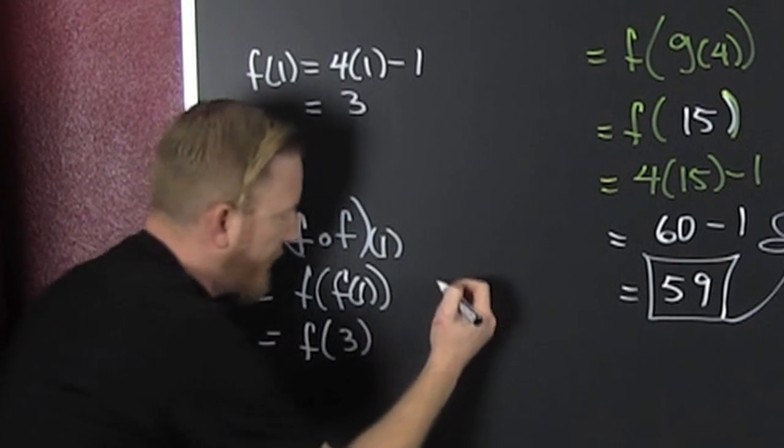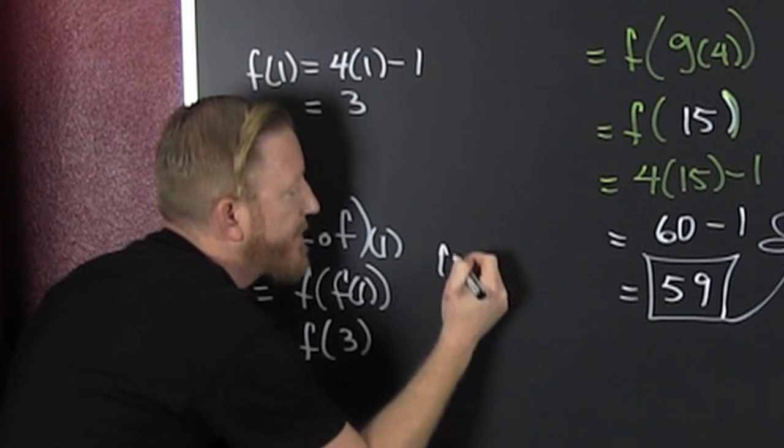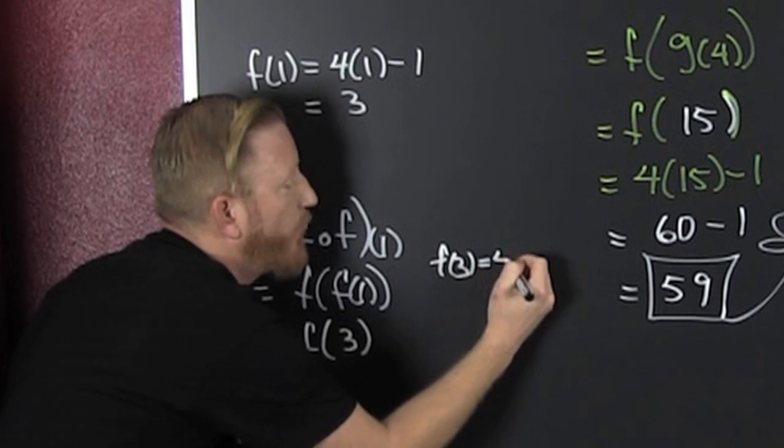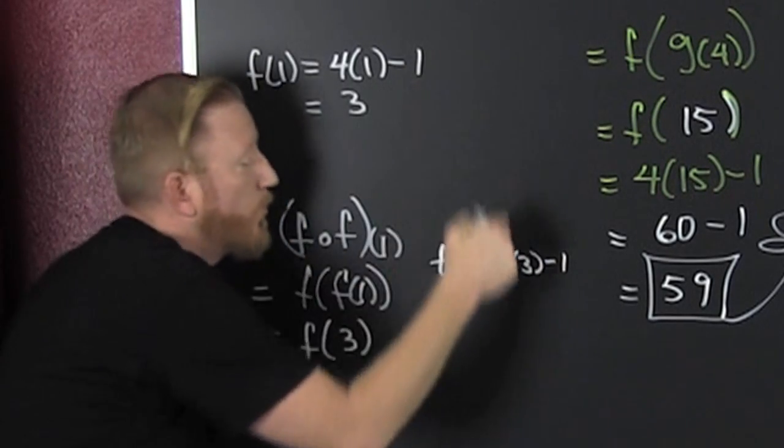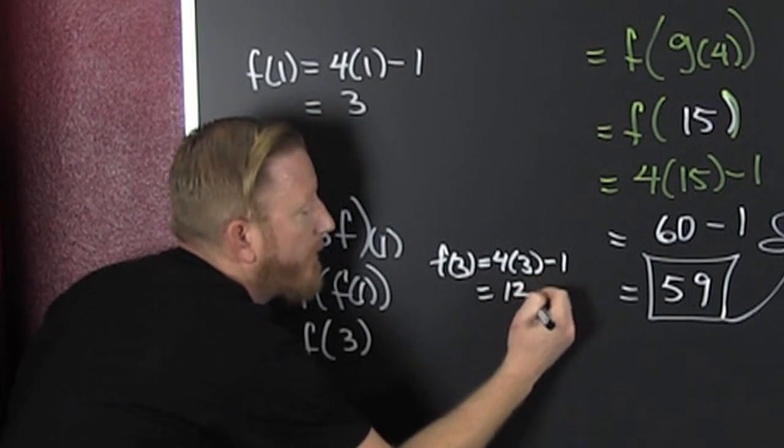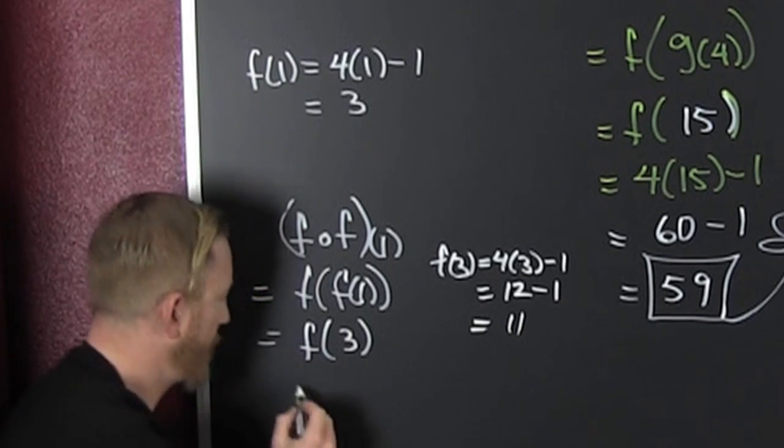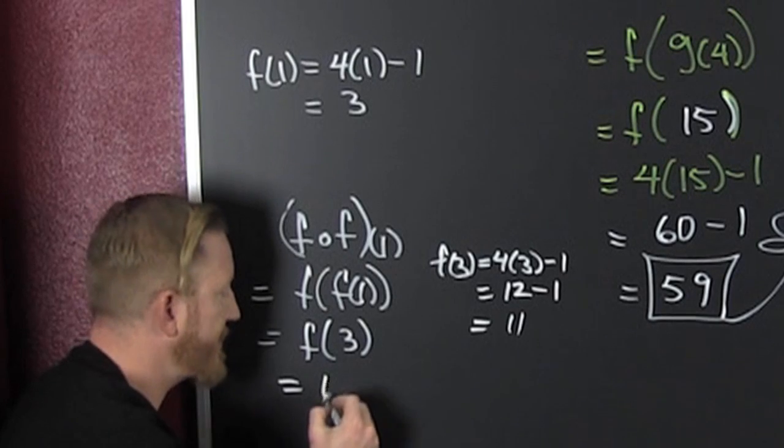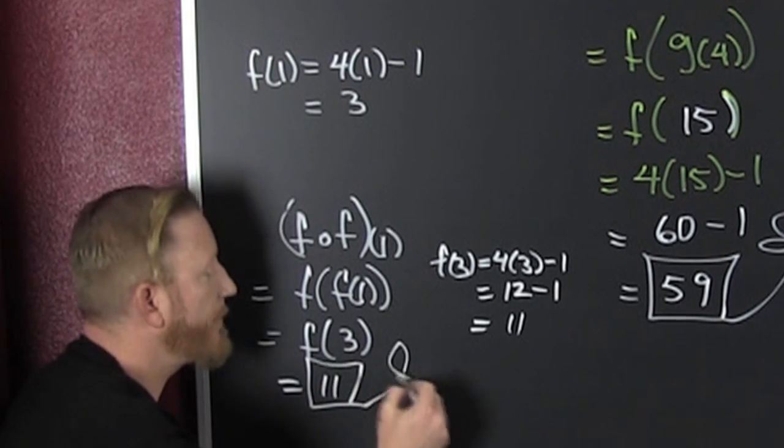So what do we see? We need f of 3. f of 3. That's 4 times 3 minus 1, right? Right. So, then that's 12 minus 1. So, f of 3 is 11. So, f of f of 1 is 11.